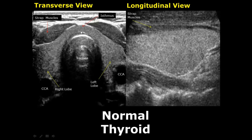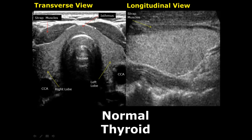The thyroid gland is located in the neck region. It is divided into two lobes — the right lobe and the left lobe — and these two lobes are connected together through the isthmus. The thyroid has a hyperechoic appearance. The trachea is visible here, having shadows due to the presence of air, and anterior to the thyroid are the strap muscles.